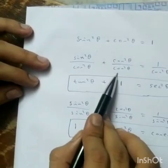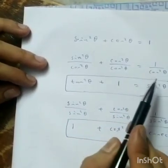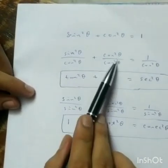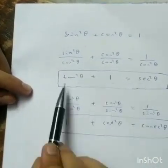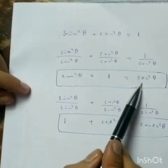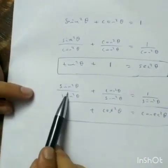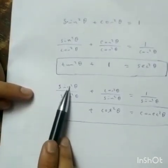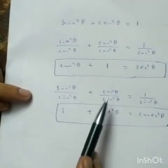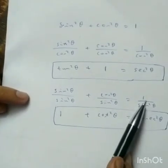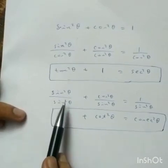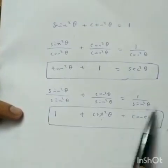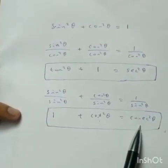Dividing both sides by cos squared theta gives cos squared theta over cos theta plus 1 over cos theta. And dividing through by sin squared theta: sin squared theta over sin squared theta plus cos squared theta over sin squared theta equals 1 over sin squared theta — giving 1 plus cot squared theta equals cosec squared theta.